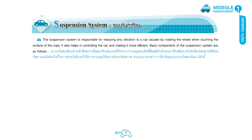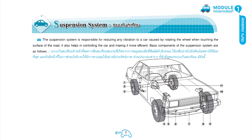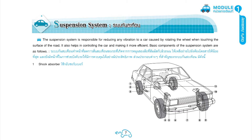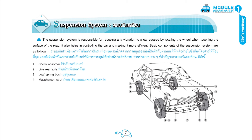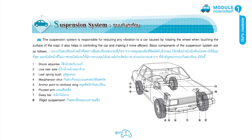Basic components of the suspension system are as follows: 1. Shock Absorber, 2. Live Rear Axle, 3. Leaf Spring Bush, 4. McPherson Strut, 5. Anchor Point to Reinforce Wing, 6. Pivoted Arm, 7. Sway Bar, 8. Rigid Suspension, 9. Rubber, 10. Coil Springs, 11. Leaf Spring.